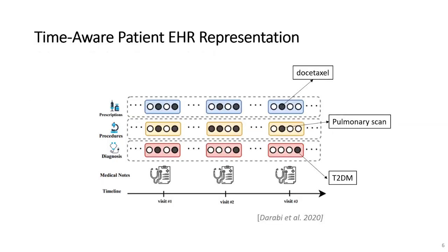EHR data of a patient can be represented in sequential order. By treating each visit of a patient as a bag of medical concepts — such as drug, procedure, and diagnosis — for example, docetaxel, pulmonary scanning, and type 2 diabetes mellitus, we can obtain a time-aware representation of the EHR data.